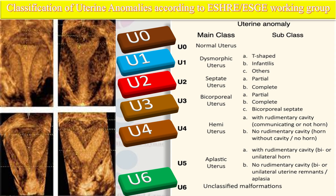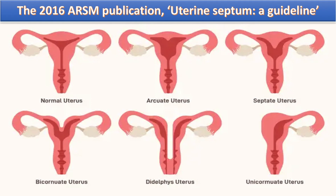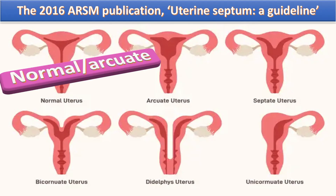U4 means hemi-uterus or unicornuate uterus, where only one horn of the uterus is present, linked to one fallopian tube and ovary, while the other horn is absent or rudimentary. U5 means aplastic uterus, meaning absent uterus. U6 is for still unclassified cases. The 2016 ASRM publication on uterine septum guidelines also reported arcuate uterus as not clinically relevant, with specific criteria for diagnosing septate and bicornuate uterus.